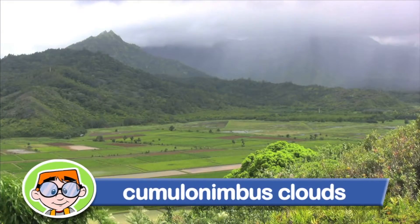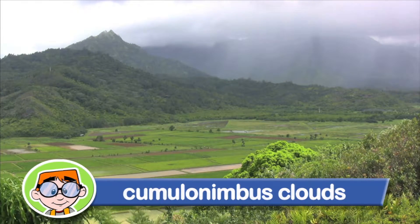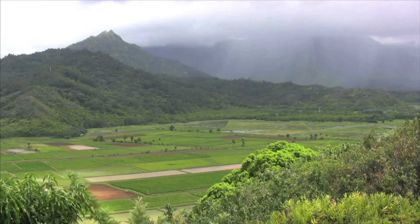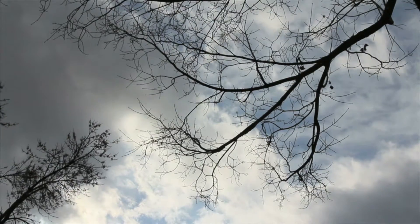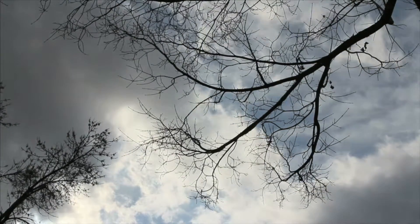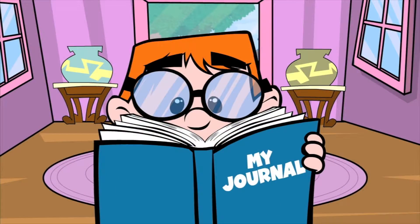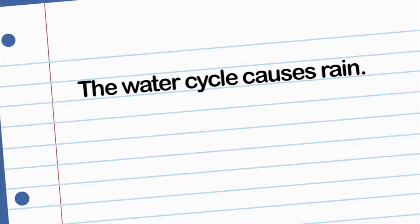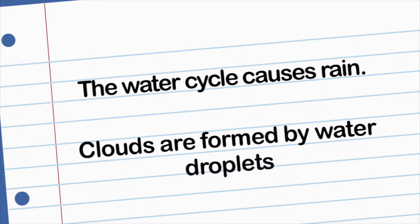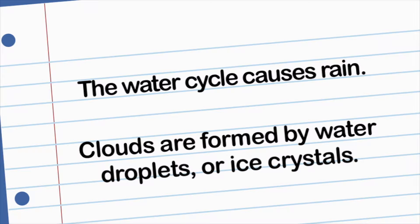Cumulonimbus clouds produce showers and thunderstorms. The rain comes and goes with these clouds. I get it — the water cycle causes rain, and clouds are formed by water droplets or ice crystals. Got it!